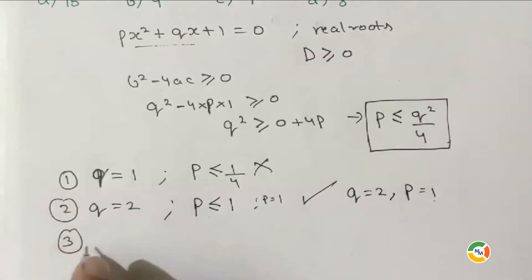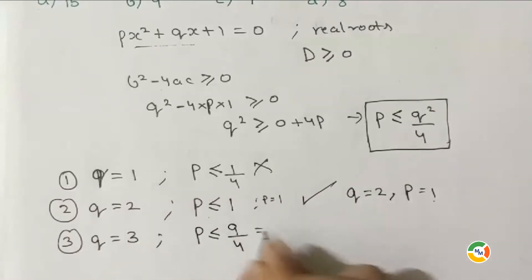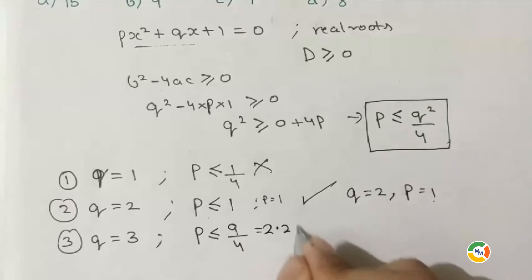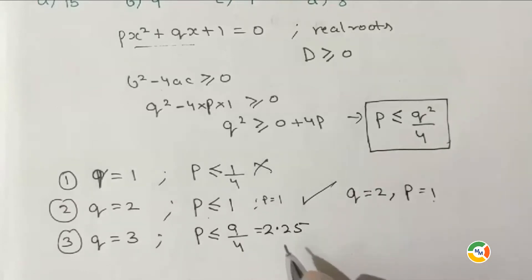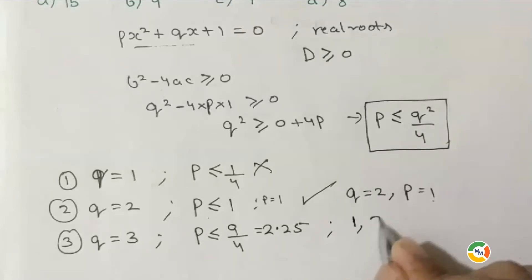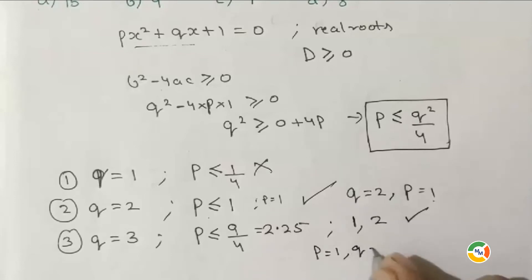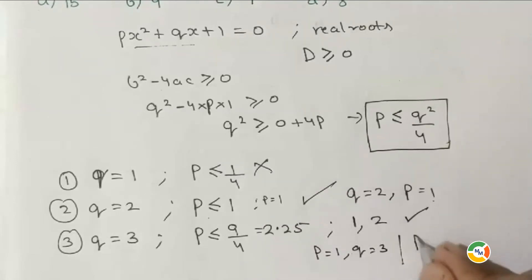Third case: if q = 3, then p ≤ 9/4 = 2.25. The integers less than 2.25 from our set are 1 and 2. So this case is possible with (p, q) = (1, 3) and (p, q) = (2, 3), giving two solutions.